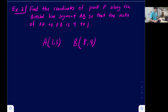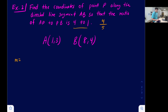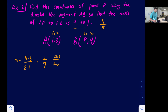Now let's do one more example without a graph. We want to find the coordinates of point P along the directed line segment AB so that the ratio of AP to PB is 4 to 1 — that's four parts to one, so five parts total. Going from point A, we want to go four-fifths of the way. We label the coordinates as (x₁, y₁) and (x₂, y₂), and calculate slope: (y2 − y1) over (x2 − x1) = (4 − 3) over (8 − 1) = 1 over 7. So the rise is 1 and the run is 7.